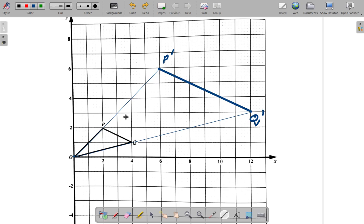So, in this case, P prime Q prime would be 3 times longer than PQ. So, if you go from P prime to Q prime straight across, you cover 6 units. From P to Q, you would cover 2 units here. And 6 is 3 times longer than 2. So, that's what you would get.